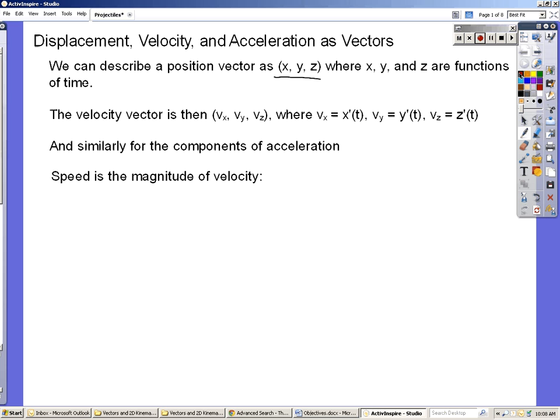So to get the velocity vector, it's just the derivative of this vector. The derivative of a vector means that to get the x component of the velocity, we take the derivative of x. To get the y component of velocity, we take the derivative of y. And to get the z component of velocity, we take the derivative of z.